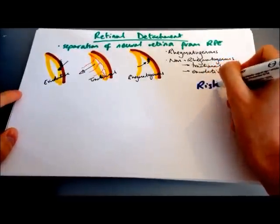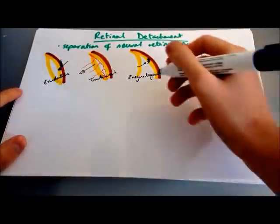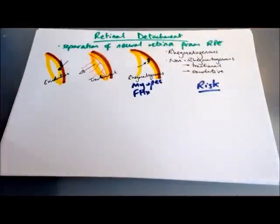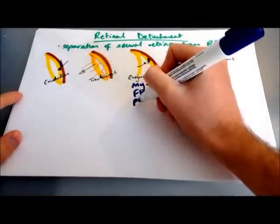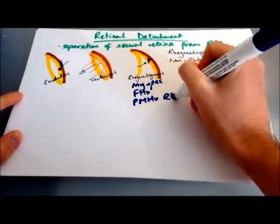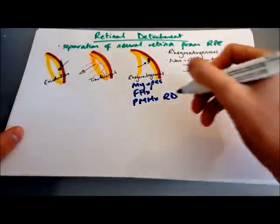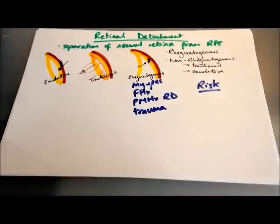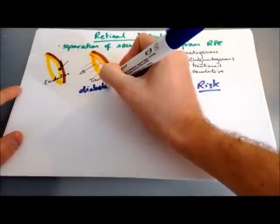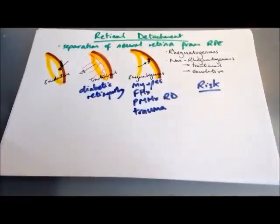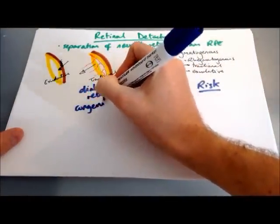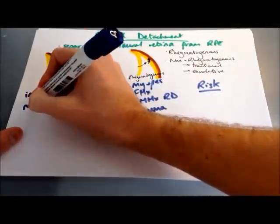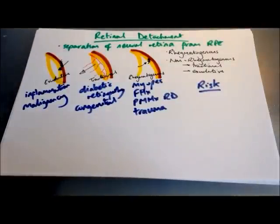Each type of retinal detachment has different risk factors. In rhegmatogenous: myopic people (short-sighted) have increased risk because they have a bigger eye, as do those with a family history, previous retinal detachment, and trauma — which can be several months before the detachment. Non-rhegmatogenous tractional: neovascularisation as in diabetic retinopathy, and congenital causes. Exudative: anything that produces extra fluid — so inflammation and malignancy are two of the main causes.